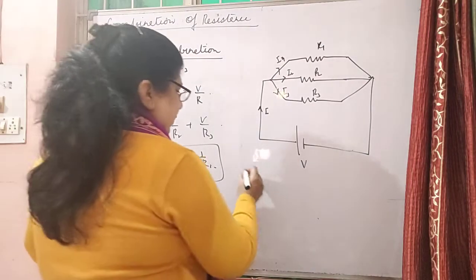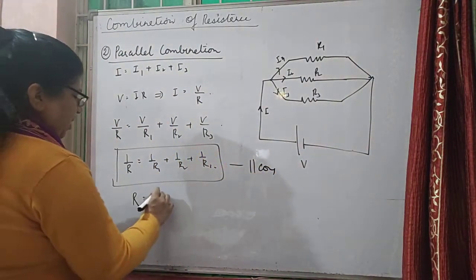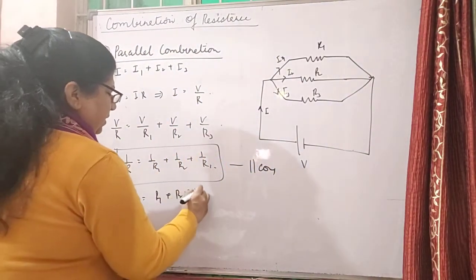If you have seen one thing, this was the parallel combination and this is the series combination: r1 plus r2 plus r3.